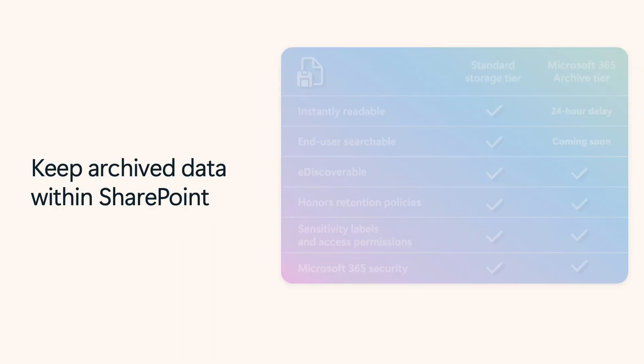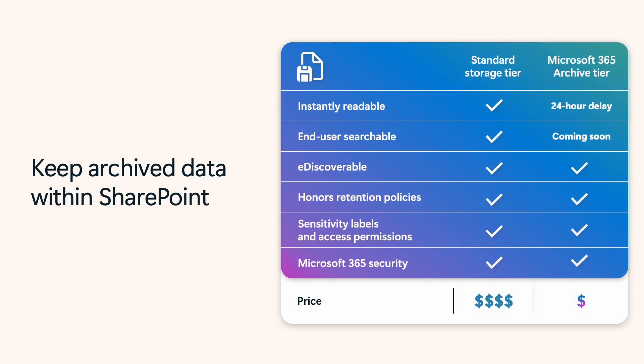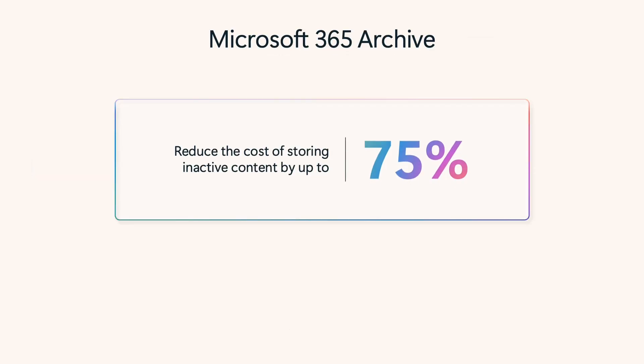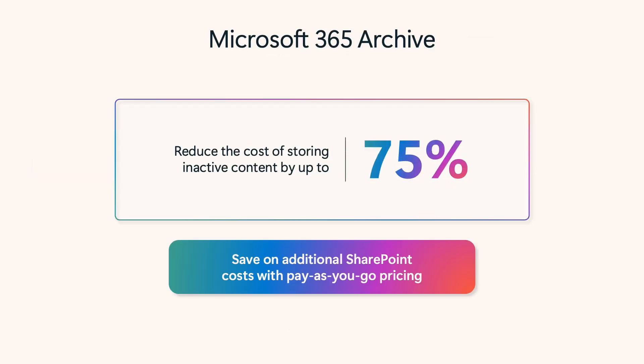As with your standard storage tier, Archive keeps the same fundamental e-discoverability, retention policies, sensitivity labels, security, and other Purview capabilities — all at up to 75% cost savings on additional SharePoint storage.